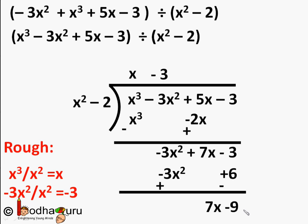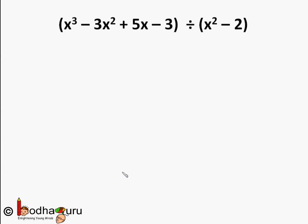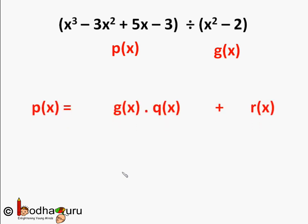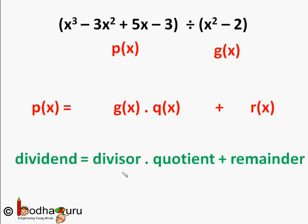So x minus 3 is the quotient and 7x minus 9 is the remainder. The division steps for a cubic polynomial are the same as what we learned for a quadratic polynomial. In general, when we divide a polynomial p(x) by another polynomial g(x), and we get q(x) as the quotient and r(x) as the remainder, then p(x) equals g(x) times q(x) plus r(x).